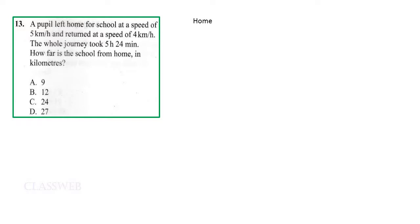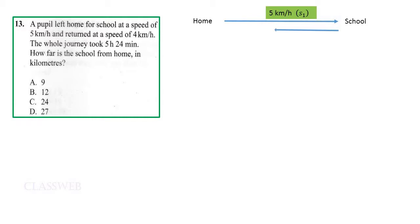The pupil started the journey from home to school traveling at a speed of five kilometers per hour — we are going to denote this as s1. The same pupil traveled from school back home at a speed of four kilometers per hour, and this we shall denote as s2.